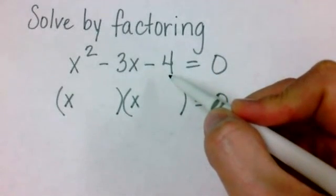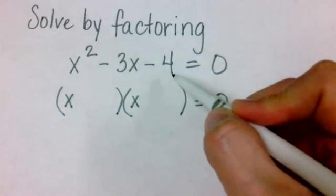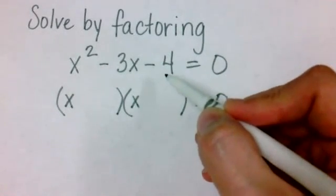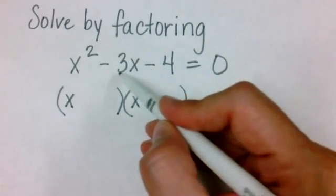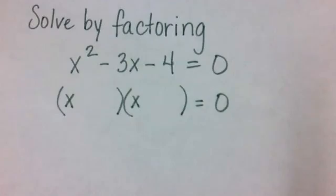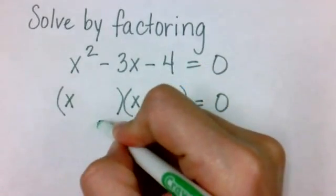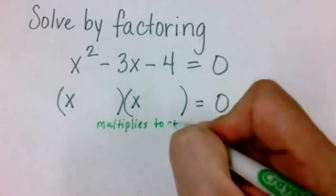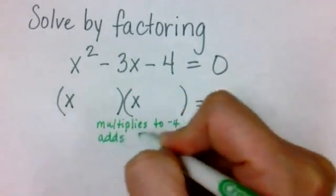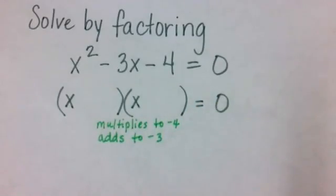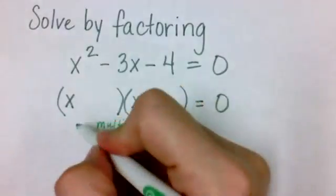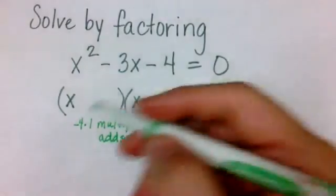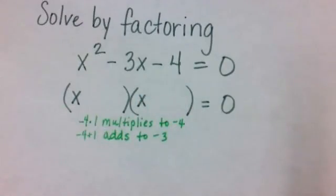Now look at the last term, the term without the variable, negative 4. We need two numbers that will multiply to give me negative 4, but also must add to give me negative 3. This would have to be negative 4 and 1, because negative 4 times 1 would give me negative 4, but negative 4 plus 1 would give me negative 3.